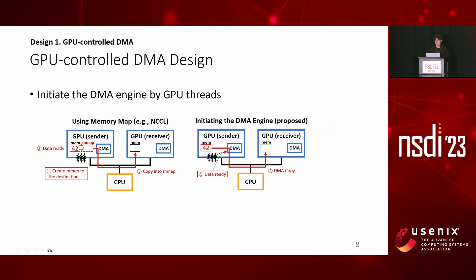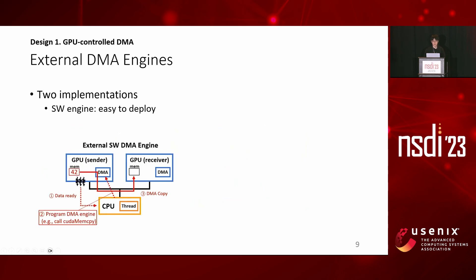The idea of GPU-controlled DMA is initiating the DMA engine directly by GPU threads. In existing methods using memory maps, GPU threads copy the data themselves, but in our proposal, they just send a DMA request to the DMA engine, removing I/O overhead on GPU. Unfortunately, this is not supported in commodity GPU hardware because DMA engines on GPU are initiated only by CPU. Since we cannot modify GPU hardware, we present external DMA engines where GPU threads can directly initiate an external DMA engine. Our software DMA engine uses a CPU thread that initiates the DMA engine on GPU upon requests from GPU threads. Even if its latency is suboptimal, this version still delivers the benefit of GPU-side control and I/O offloading.